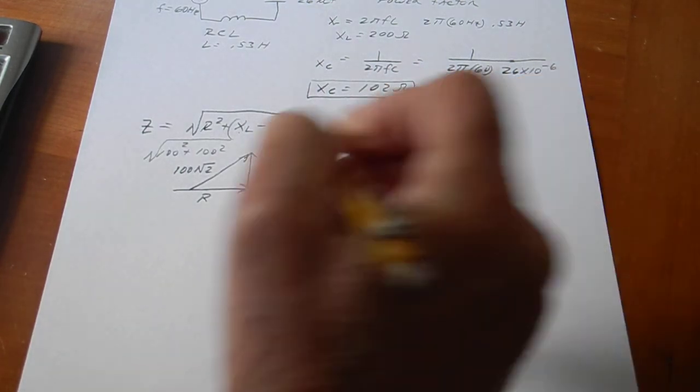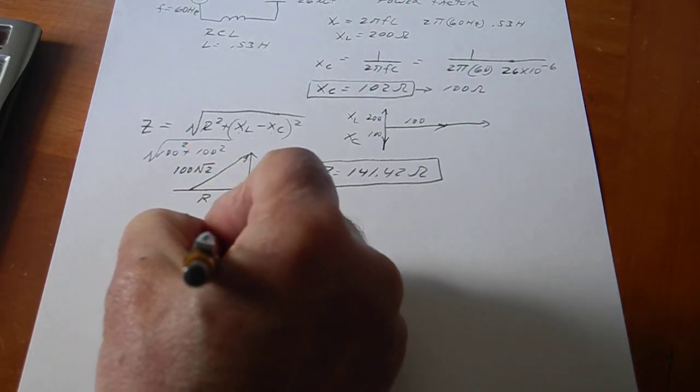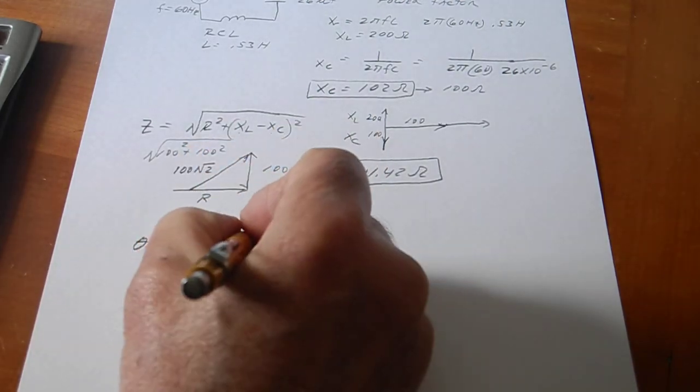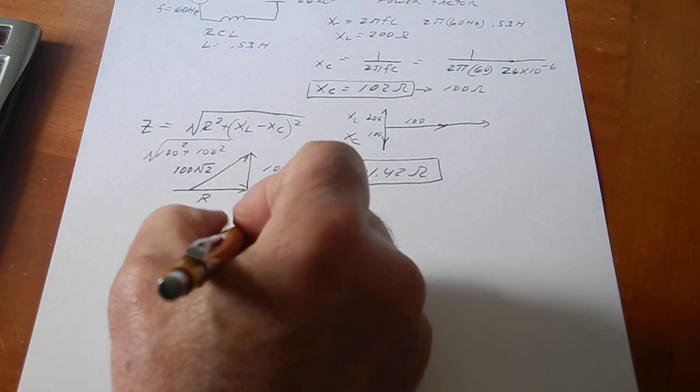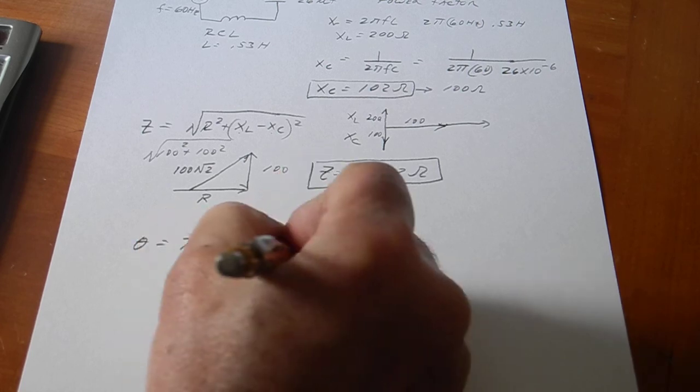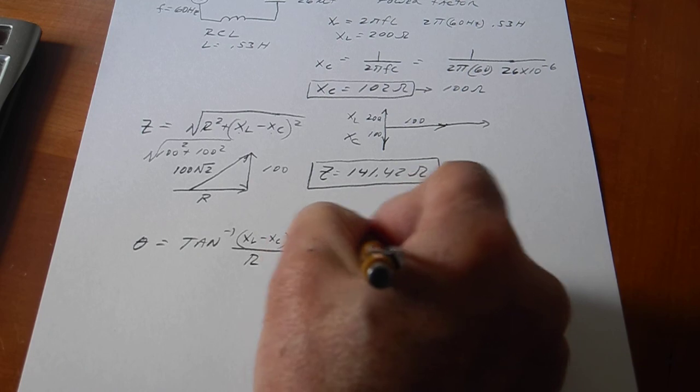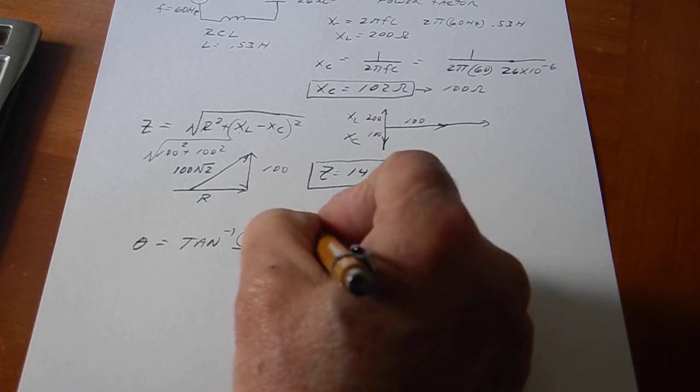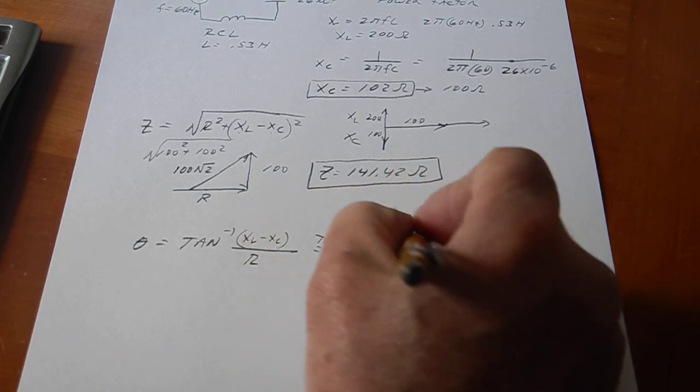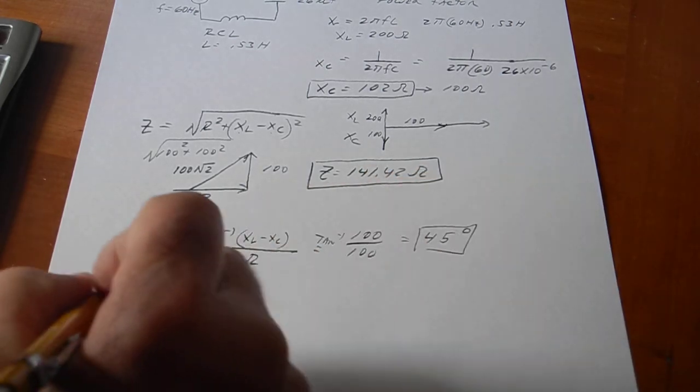Okay. And theta is the inverse tangent of the reactive components, which is X of L minus X of C, over the resistive components, which is just R. So, that's 100 divided by 100 inverse tangent, which we know is 45 degrees. Inverse tangent of 1 is 45 degrees.